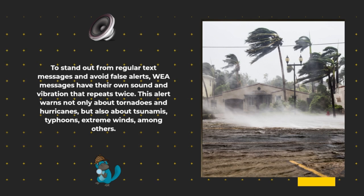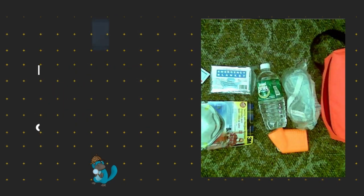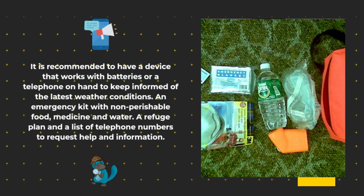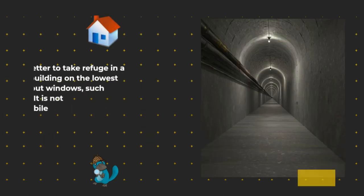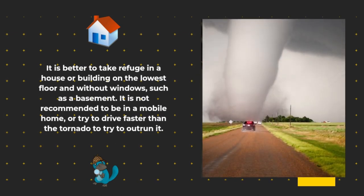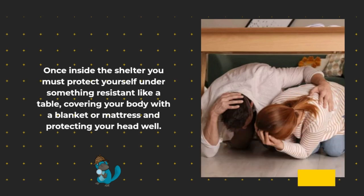How can a person protect themselves in case of a tornado? It is recommended to have a battery-powered device or telephone on hand to stay informed of the latest weather conditions, an emergency kit with non-perishable food, medicine, and water, and a refuge plan with a list of telephone numbers to request help. It is better to take refuge in a house or building on the lowest floor without windows, such as a basement. It is not recommended to be in a mobile home or try to drive faster than the tornado to outrun it. Once inside the shelter, protect yourself under something resistant like a table, covering your body with a blanket or mattress and protecting your head.